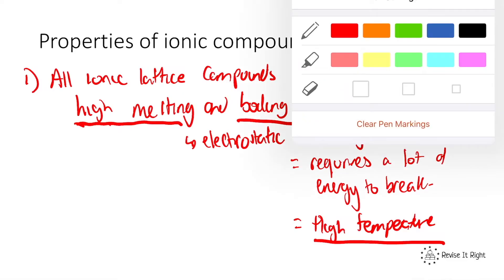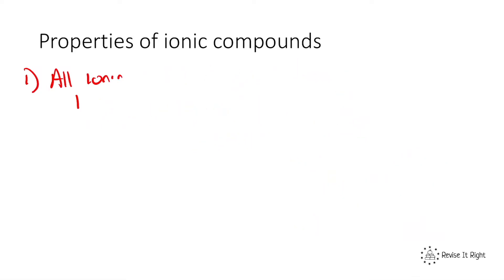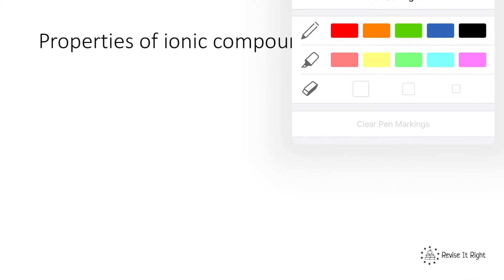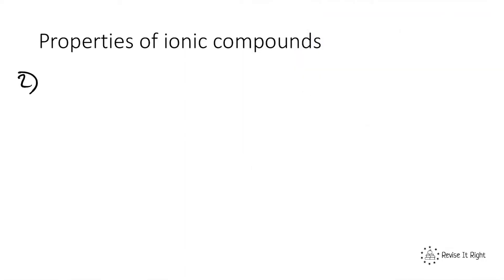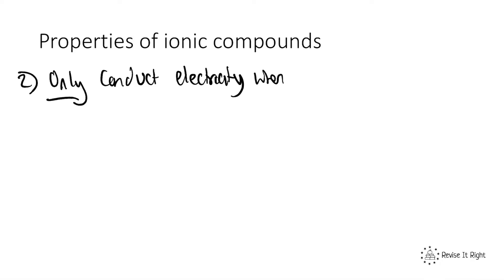Property number one: all ionic compounds have a high melting and boiling point. Moving on to property number two: ionic compounds only conduct electricity when molten or dissolved. This means they only conduct electricity when they have been melted into a liquid, or when they dissolve in water. To understand this, we need to understand how electricity is actually passed through a material — how does something conduct electricity?